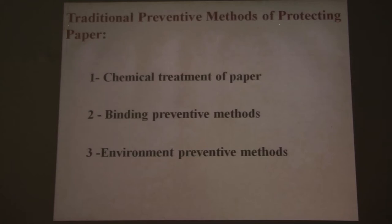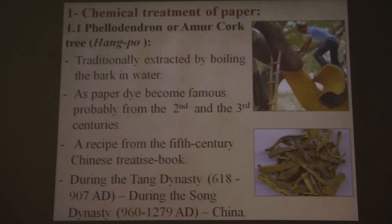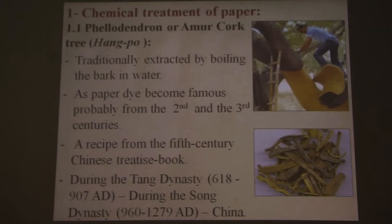We start with chemical treatment of paper. The first material is a Chinese one — philodendron, or a dye extracted from the amur cork tree, called in Chinese 'huangbo.' This material was traditionally extracted by boiling the dried bark of the amur cork tree in water many times — three or four times. There is some evidence of using this dye from the second and third centuries, but we have concrete evidence in a recipe from the fifth century in a Chinese book.